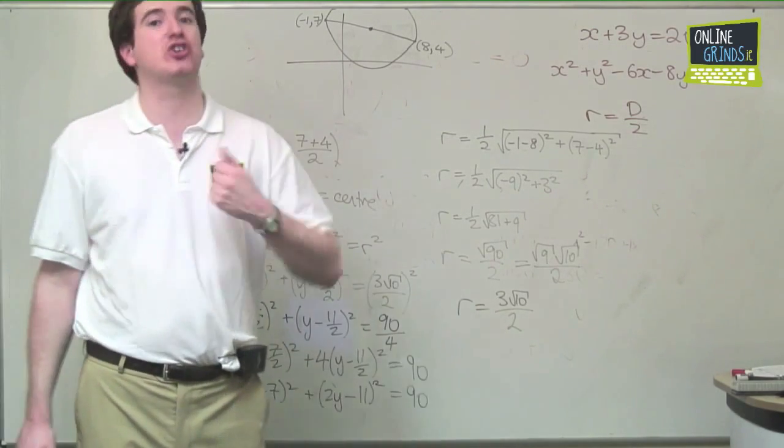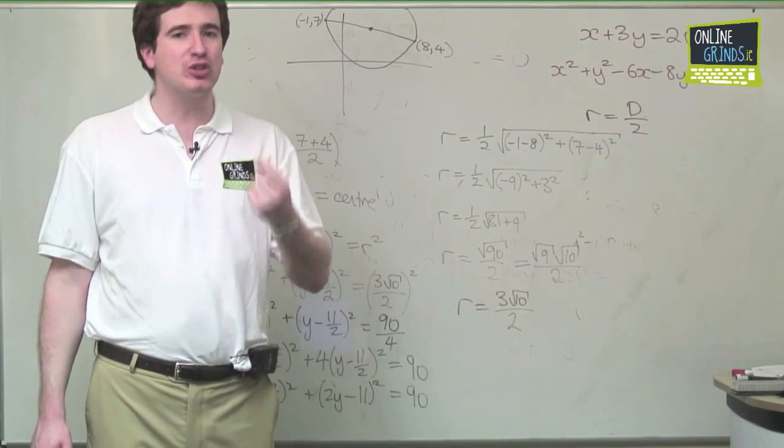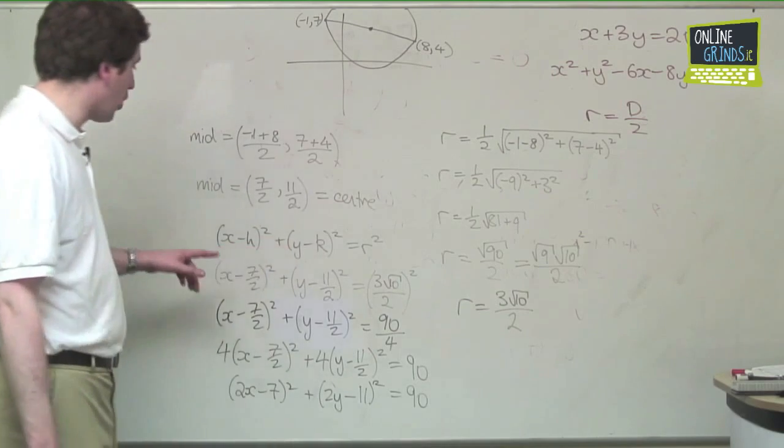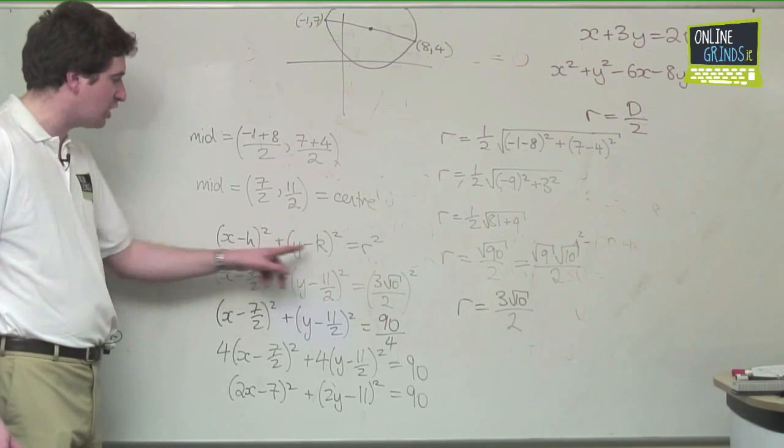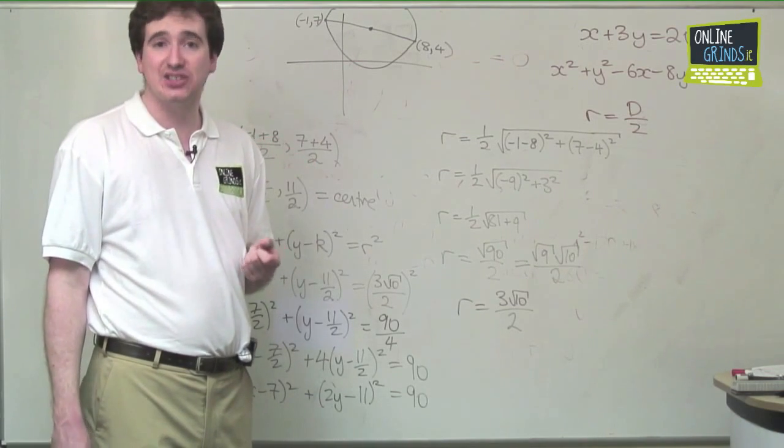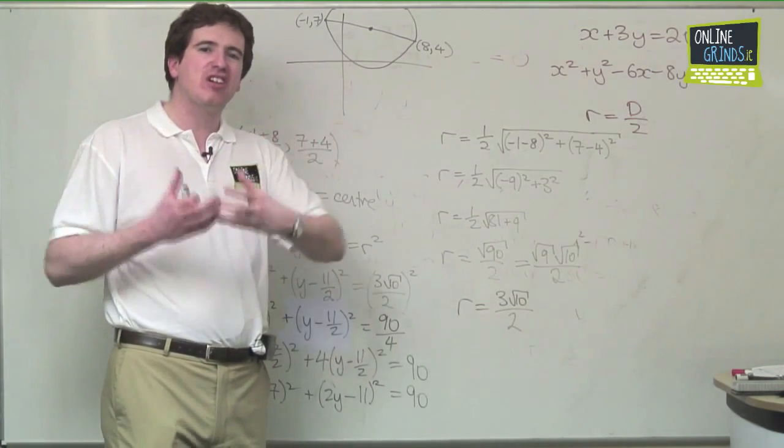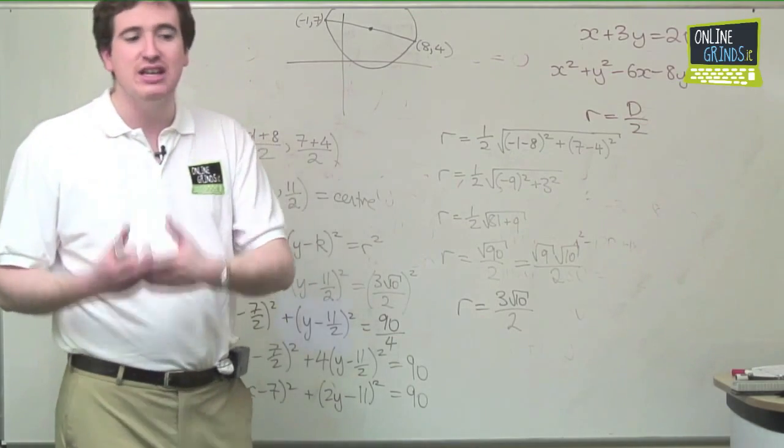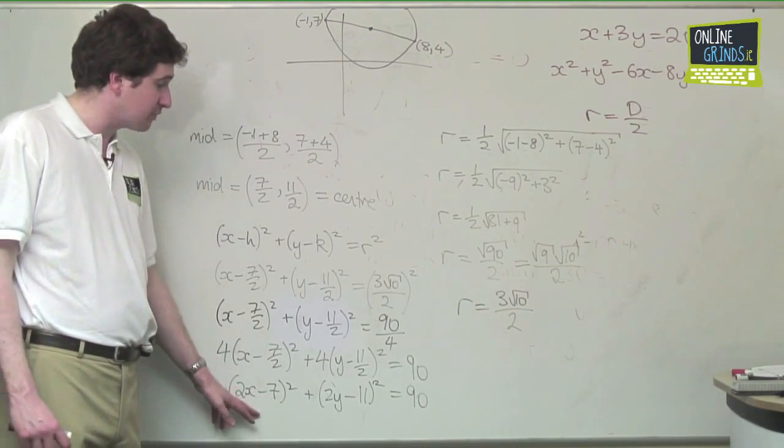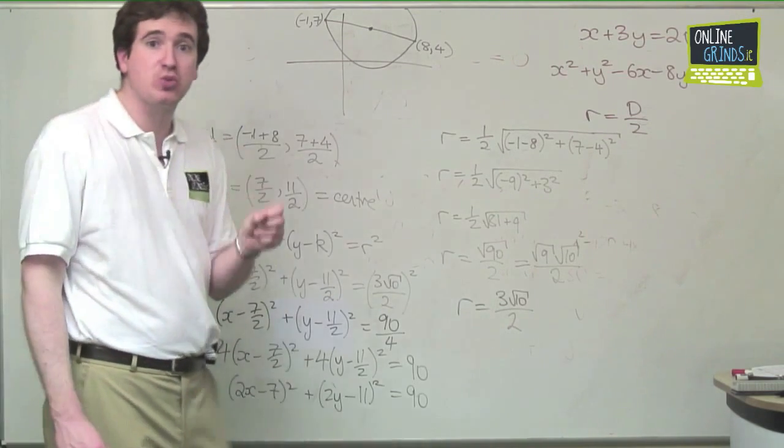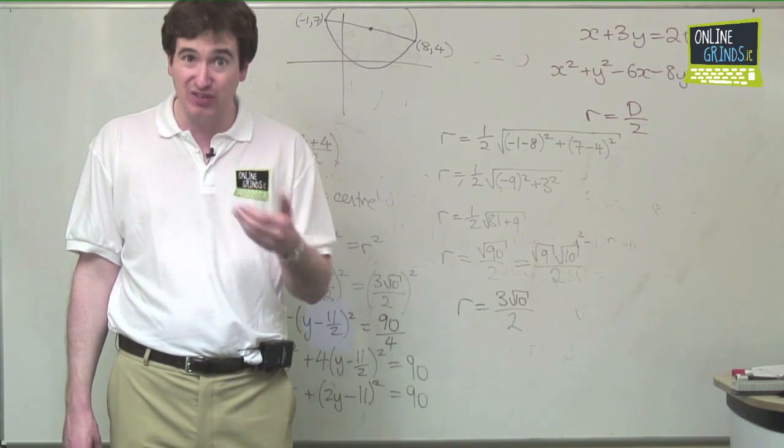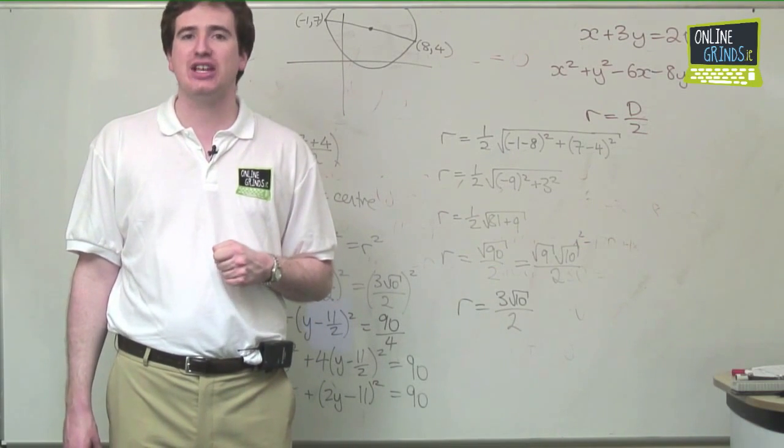And next week we will be looking at the coordinate geometry of the circle exclusively. Always remember, in any circle question there are three things you have to know. In this form of the equation we need to know H, K and R. In the other form of the equation we need to know F, G and C. So in every circle question there are three pieces of information that we can then work out to find the equation of our circle. So I hope you found tonight's session worthwhile. I'll be back next week to look at more exclusively the coordinate geometry of the circle. I'm going to look forward to seeing you next week. Till then, goodnight.